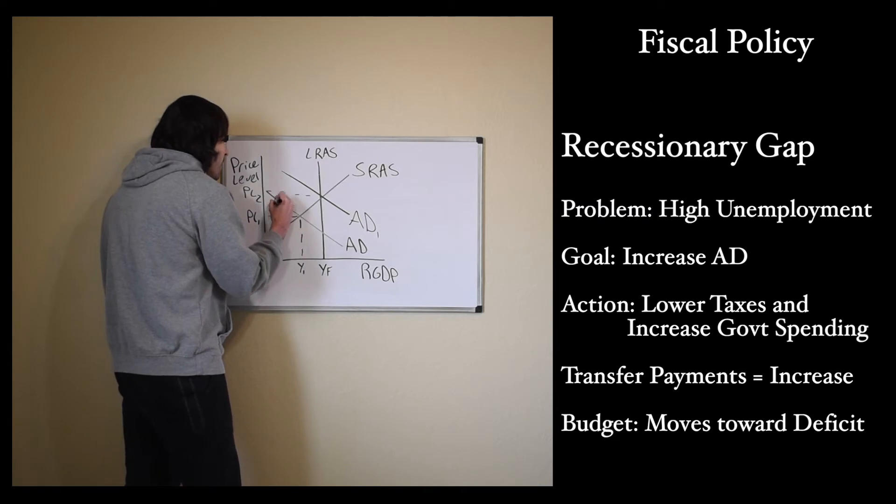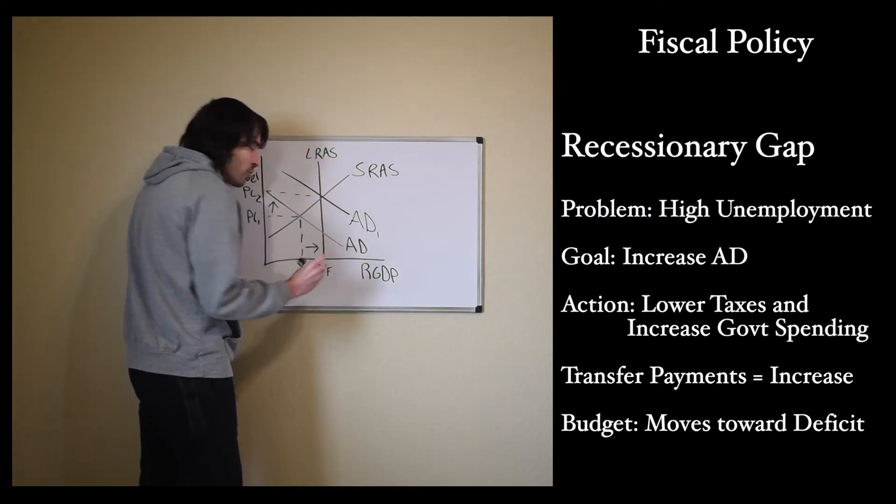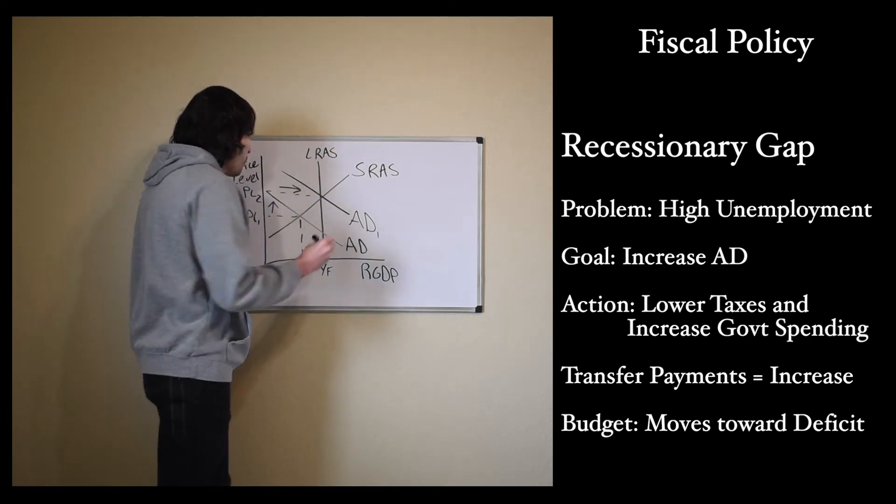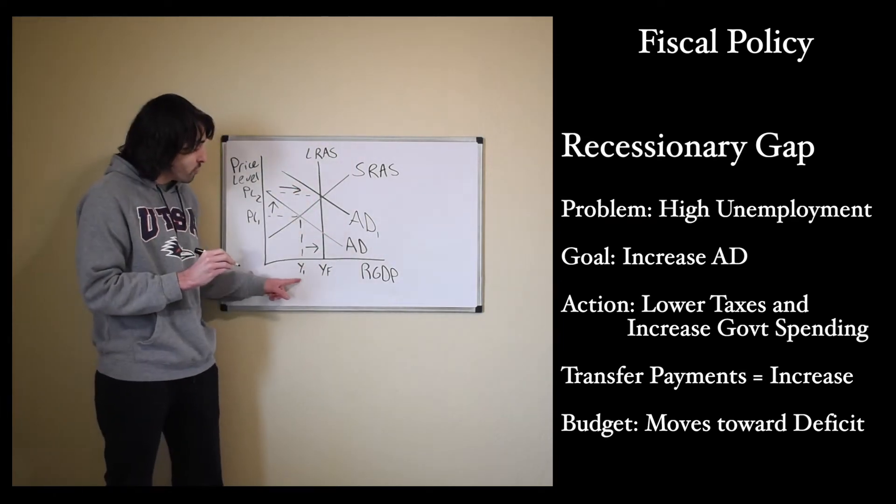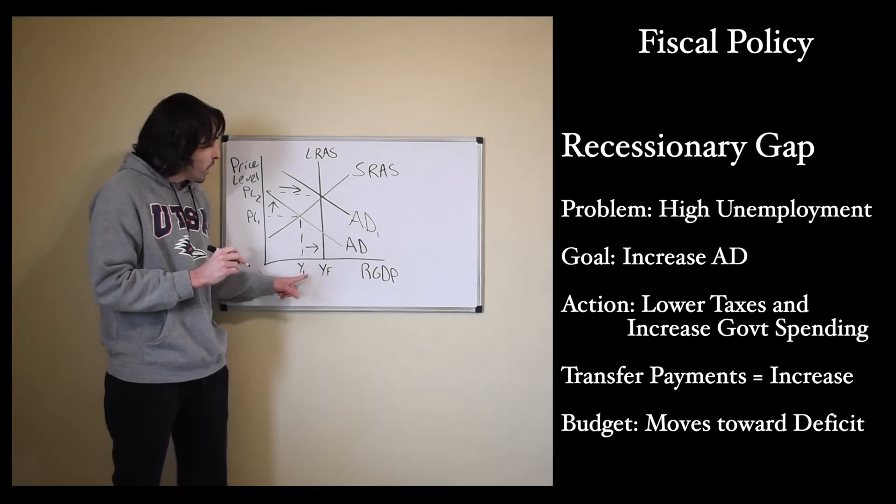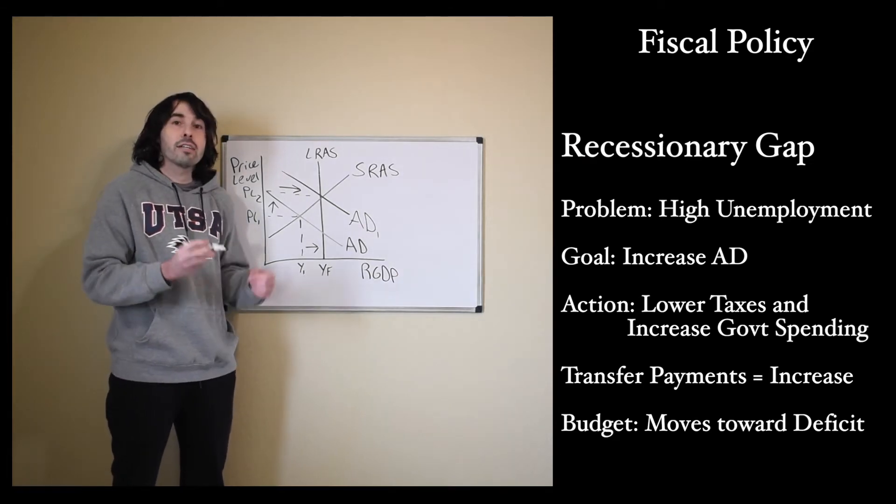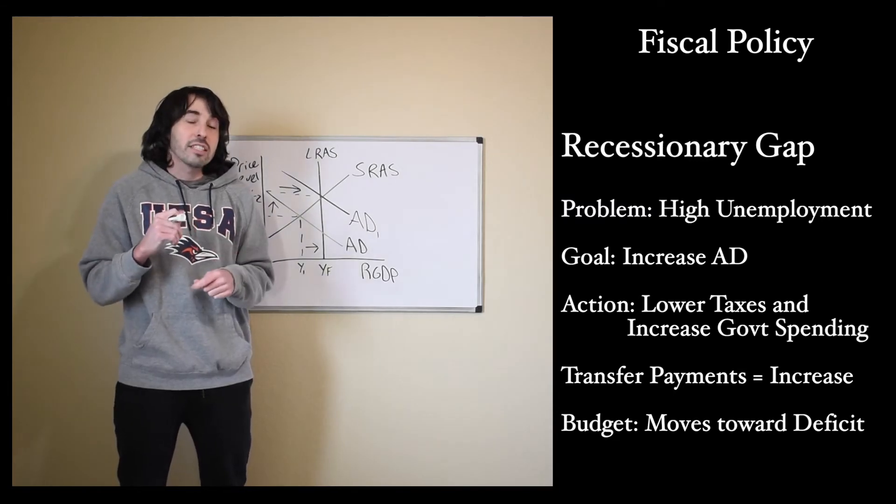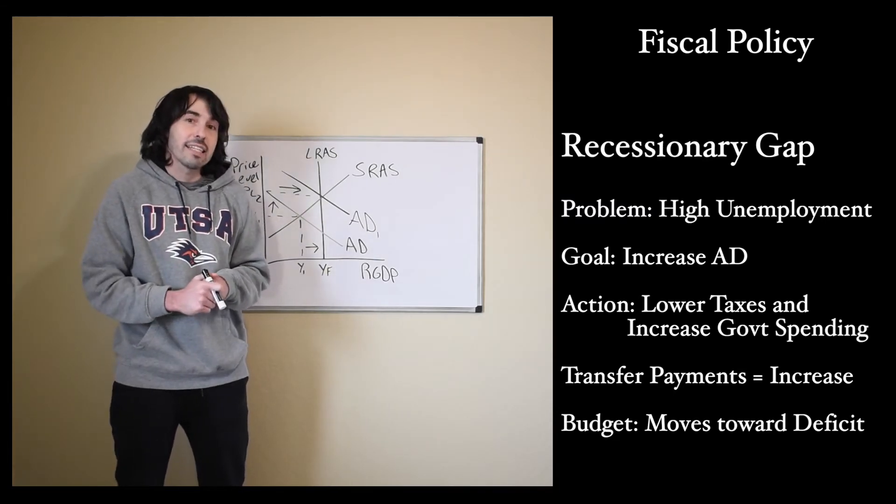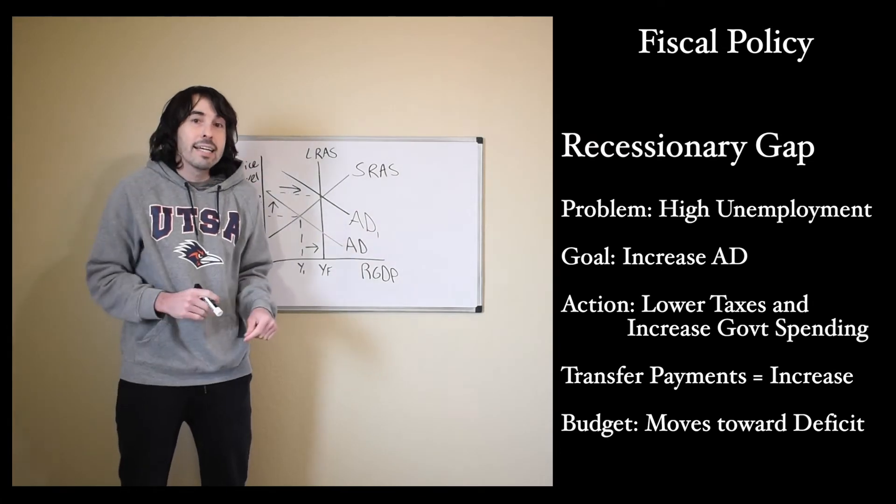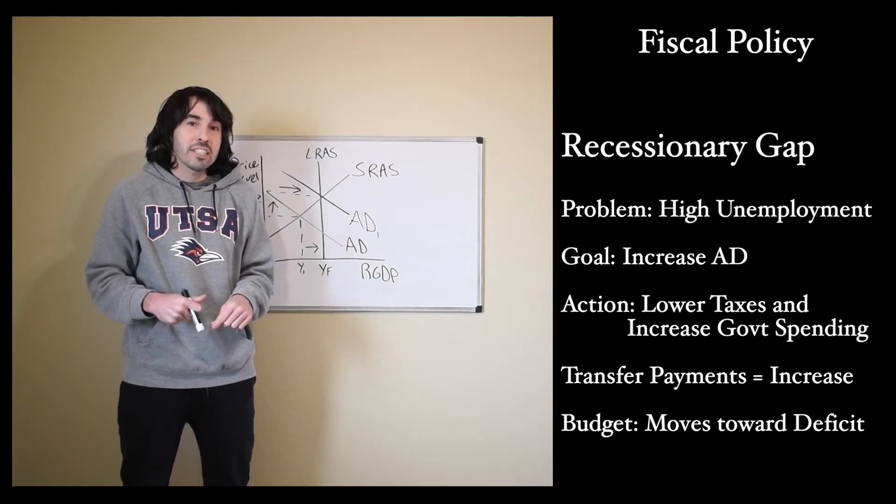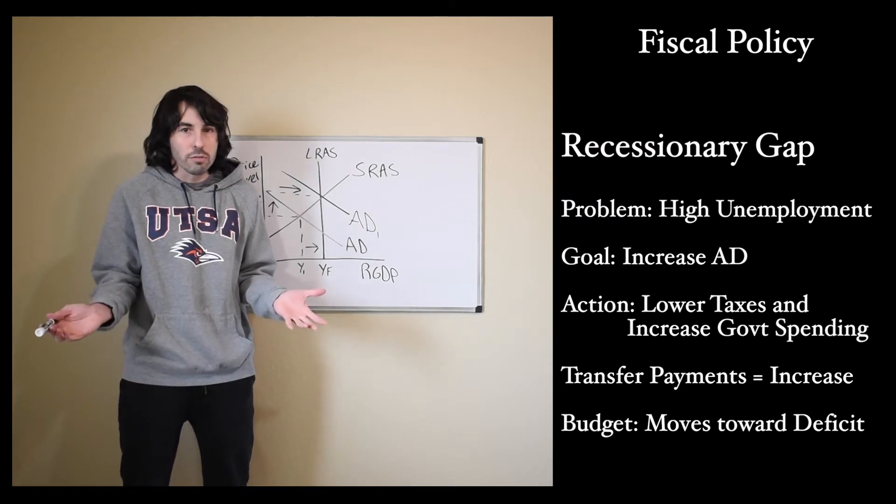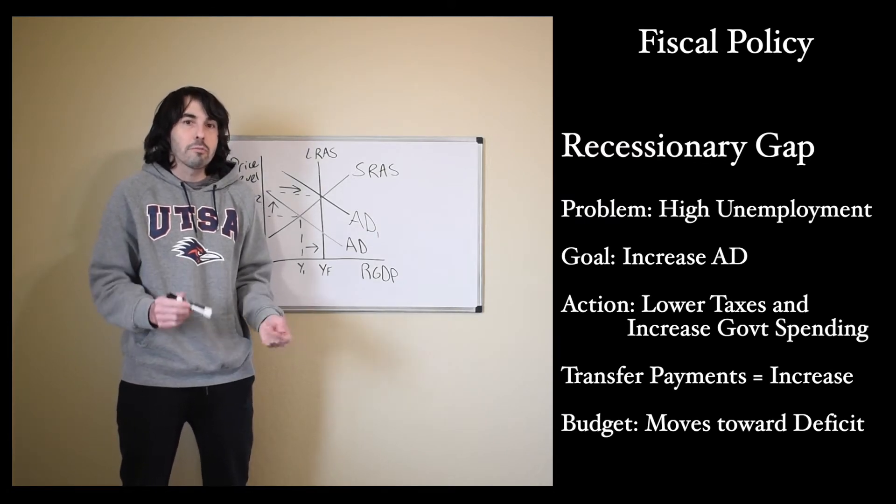And now we will have an increase in our price level. So our inflation rate is going to be increasing. But we're not too worried about that, because what we've wanted to fix is being fixed. Our real GDP is now increasing. We are at full employment output now, and our unemployment rate is decreasing. The government budget is going to be moving into a deficit now, because taxes are low and spending is high. And so we're going to have a government budget deficit, and the government is going to have to borrow money in the form of treasury bills, again, what we call government bonds.